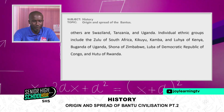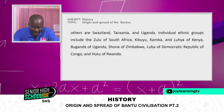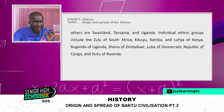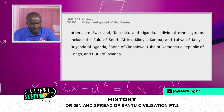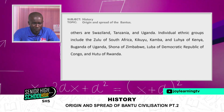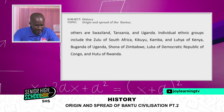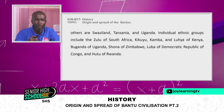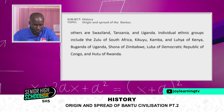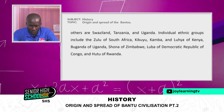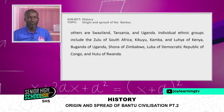Individual ethnic groups include the Zulu of South Africa; Kikuyu, Kamba, and Luhia of Kenya; Buganda of Uganda — and Buganda is so significant that there is a movie that mimics the Kingdom of Buganda of Uganda. Also, the Shona of Zimbabwe, the Luba of the Democratic Republic of Congo, and the Hutu of Rwanda.